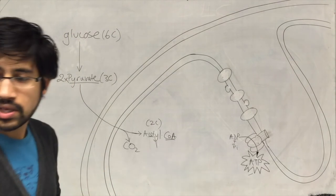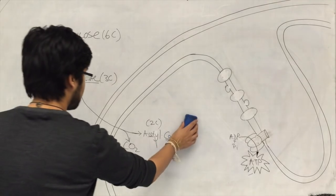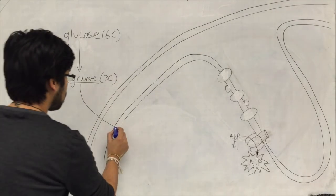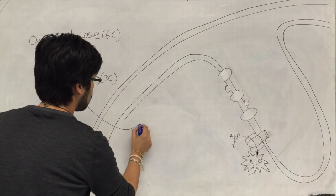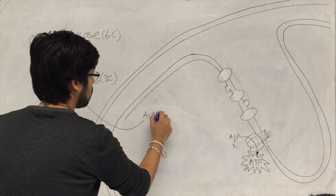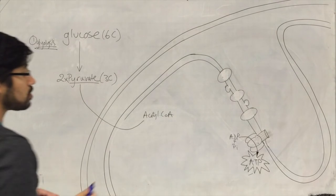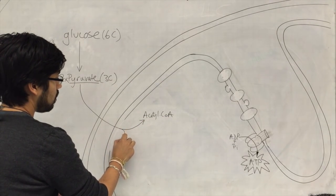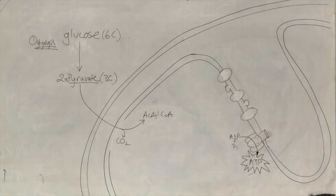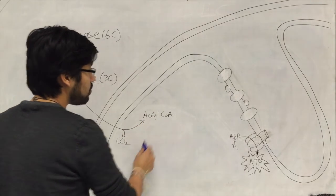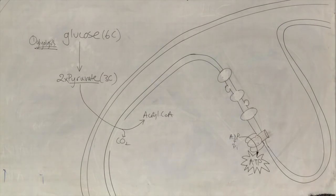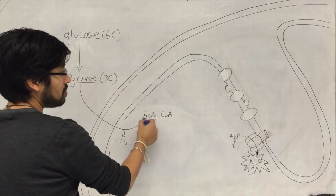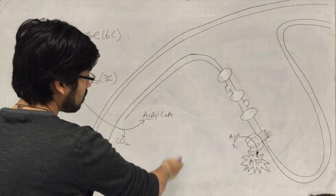So acetyl-CoA is formed, and carbon dioxide is lost in that step. This acetyl-CoA is then a fuel for the next stage — it provides carbon atoms in the form of the acetyl group to a cycle.